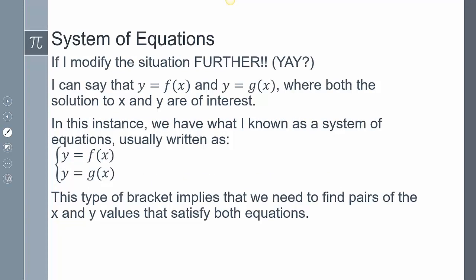If you modify the situation further, you can say y equals f(x) and y equals g(x). In that sense, now both the x and y values are of interest. We have what we know as a system of equations, written as a series of equations considered simultaneously. The bracket implies we need to find the pairs of x and y values that satisfy both equations — the x and y value that you plug in makes them all true.